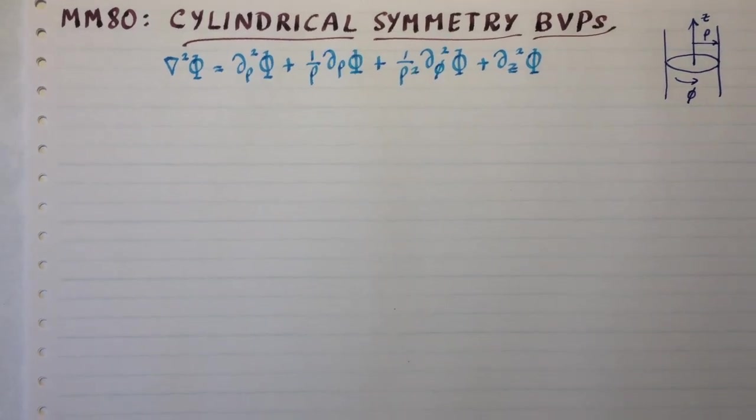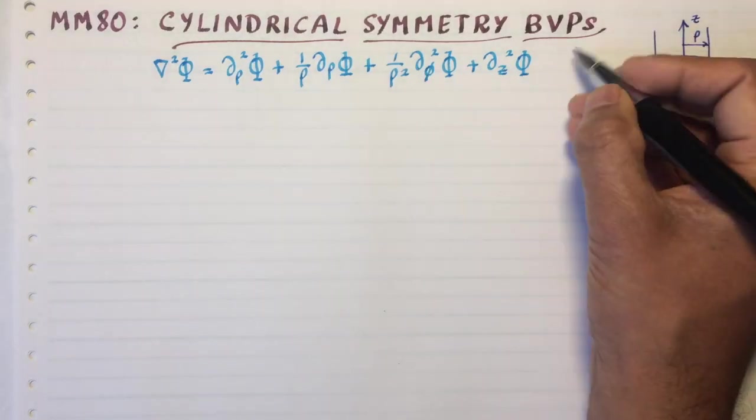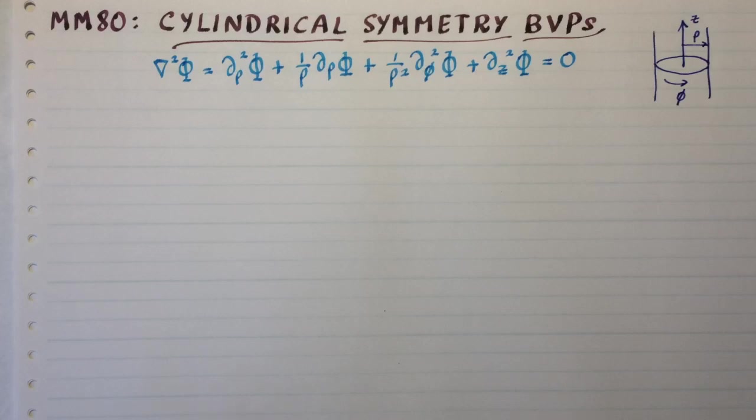Let's see how we can solve boundary value problems in cylindrical symmetry. The Laplacian now is, we must be solving the Laplace's equation in this case also. The Laplacian in cylindrical coordinates is written as follows. Once again, you can either look it up or you can find the scale factors and write down the Laplacian.